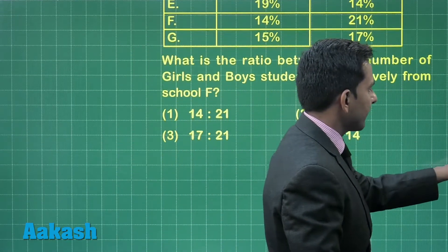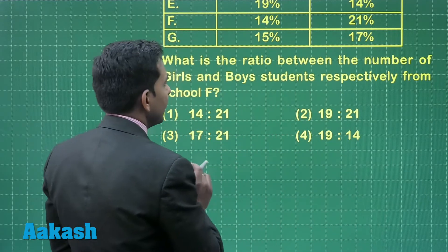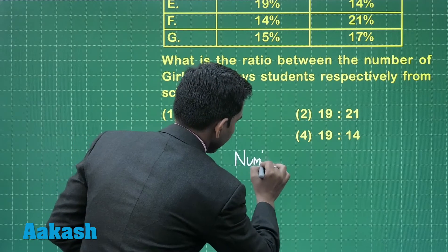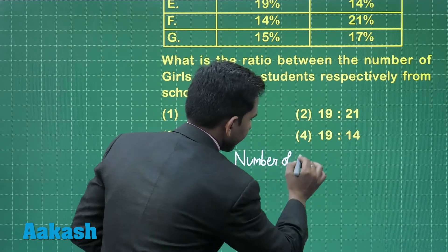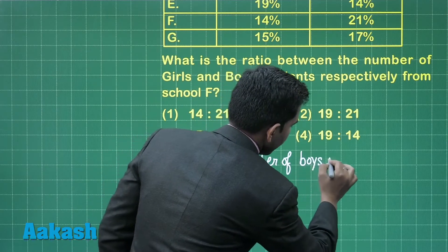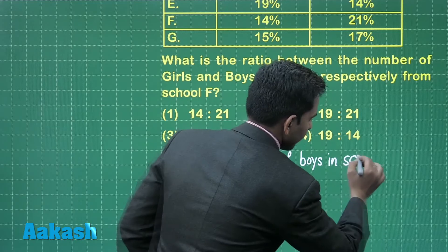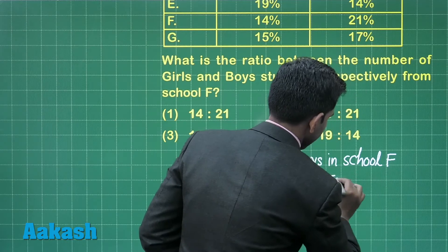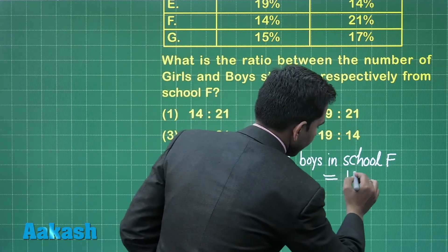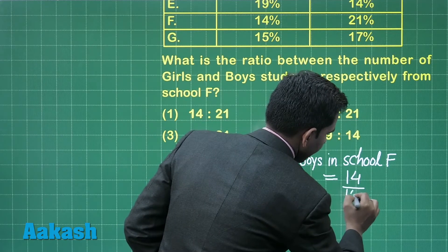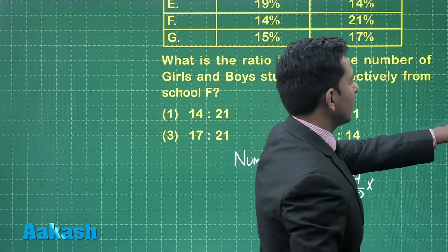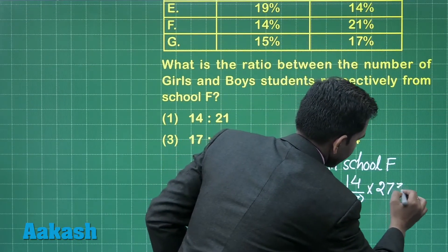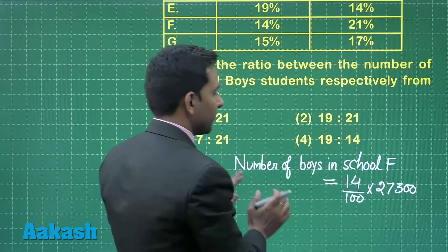First, we will find the number of boys in school F. The number of boys in school F equals 14% of the total, that means 14 divided by 100 multiplied by the total number of boys. Here we have 27,300, so the number of boys in school F is 14/100 × 27,300.